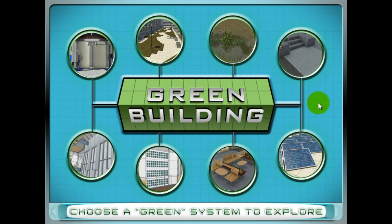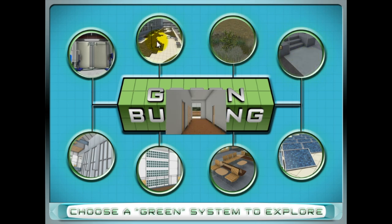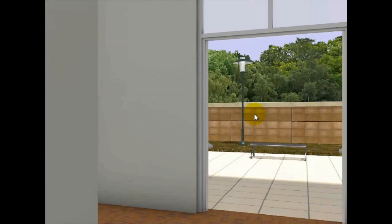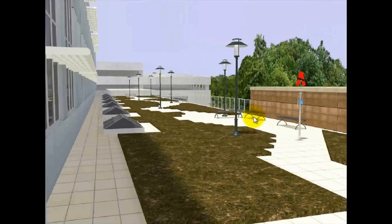The main screen presents you with eight stations to explore inside and outside of the building. Click on one of them and a short animation will play, giving you a 3D tour of where the green feature is installed.